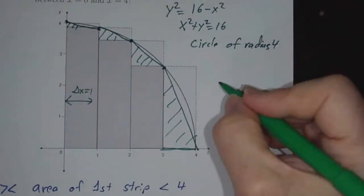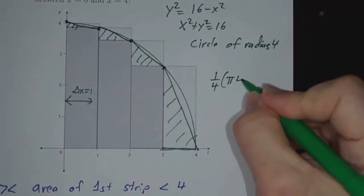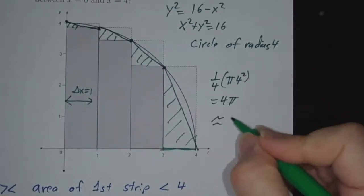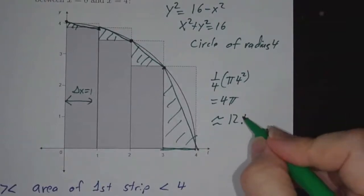So what's the area of that circle? One fourth of pi r squared, that's 4 pi, which is around 12.56.